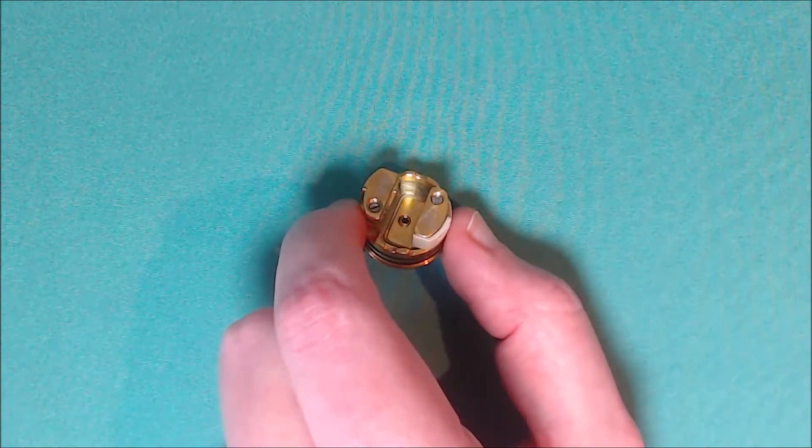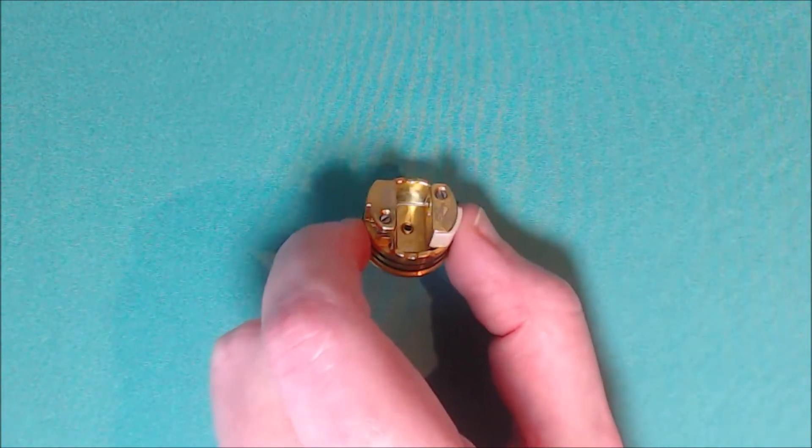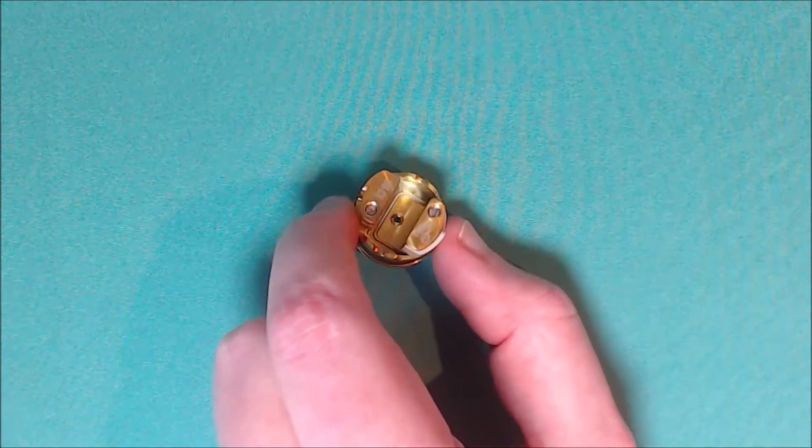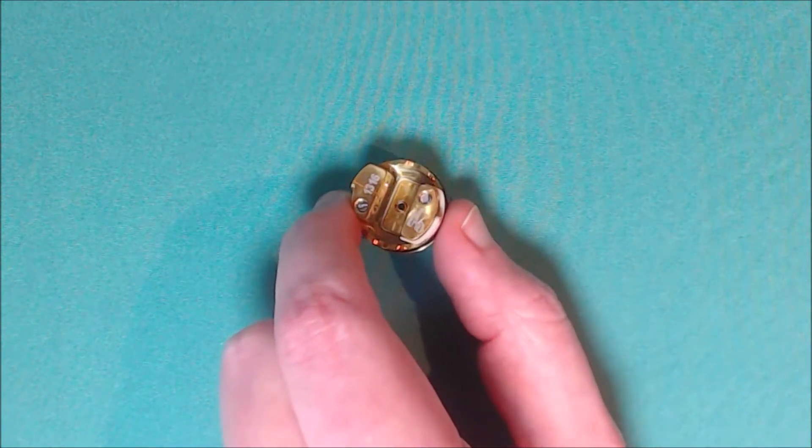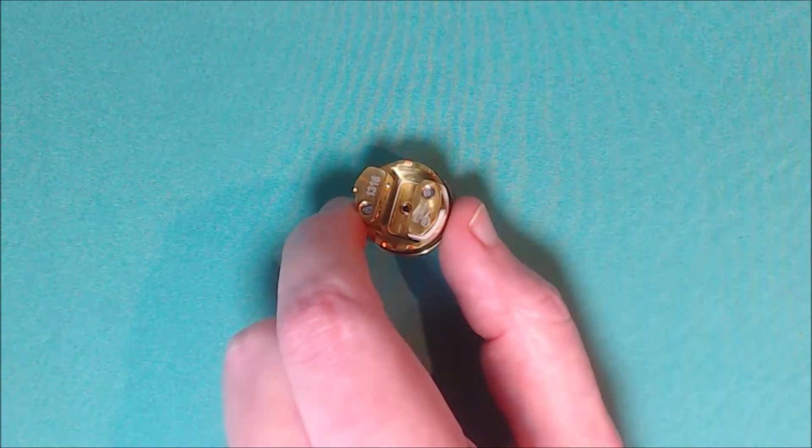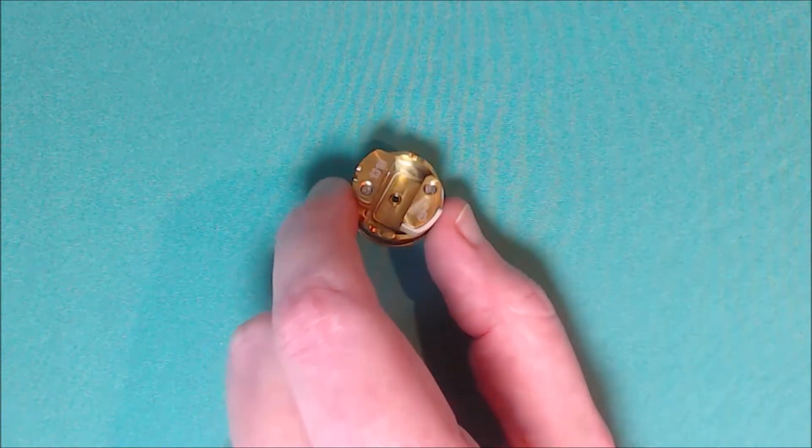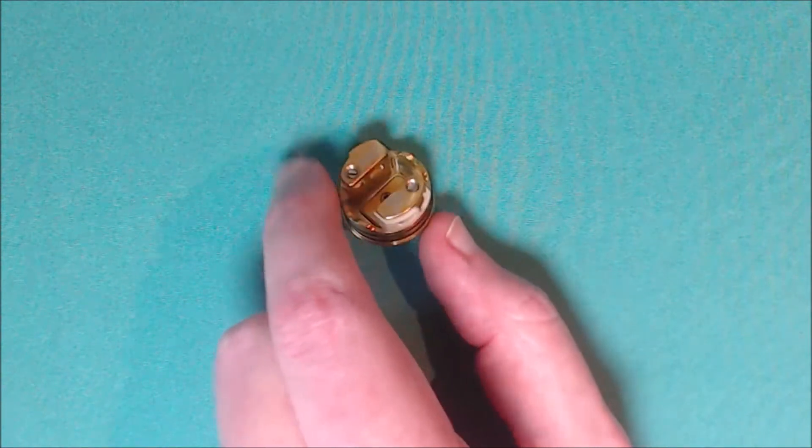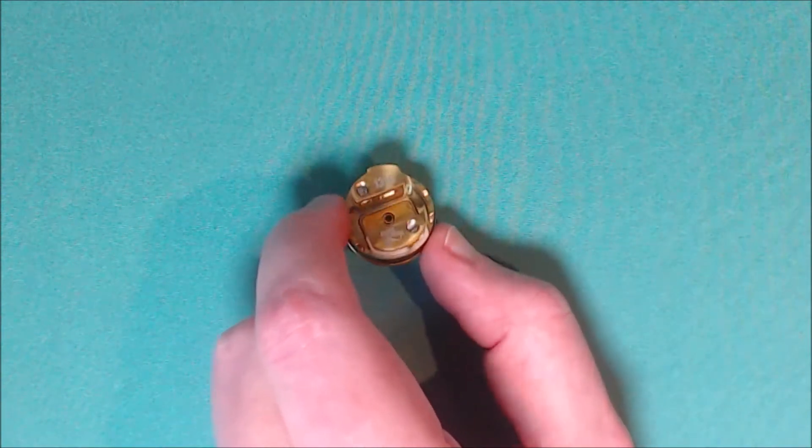And it is quite a nice deep juice well. And also the thing I like about it as well is that the squonk pin is flush with the bottom of the deck. So when you're squonking it will take out all of the juice that isn't being used. So it's very good and it's very difficult to over squonk this.